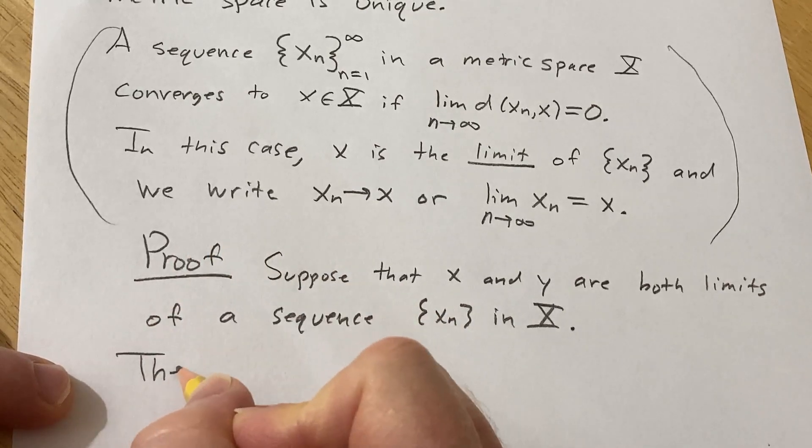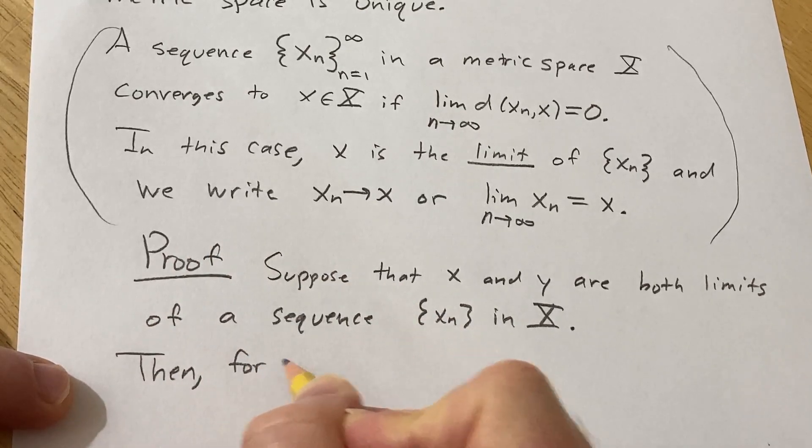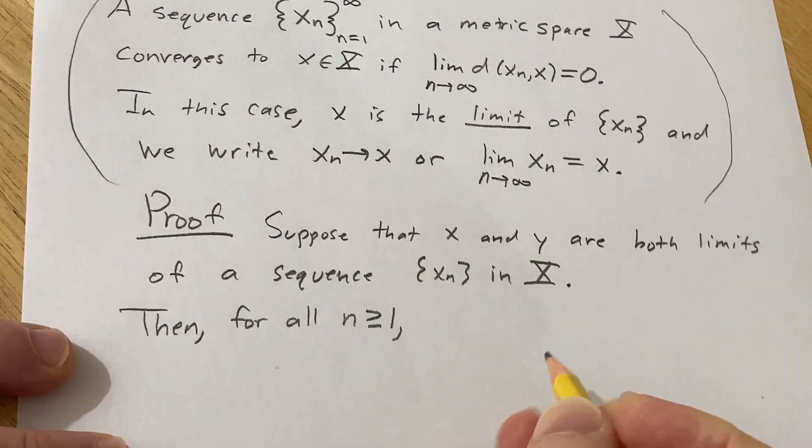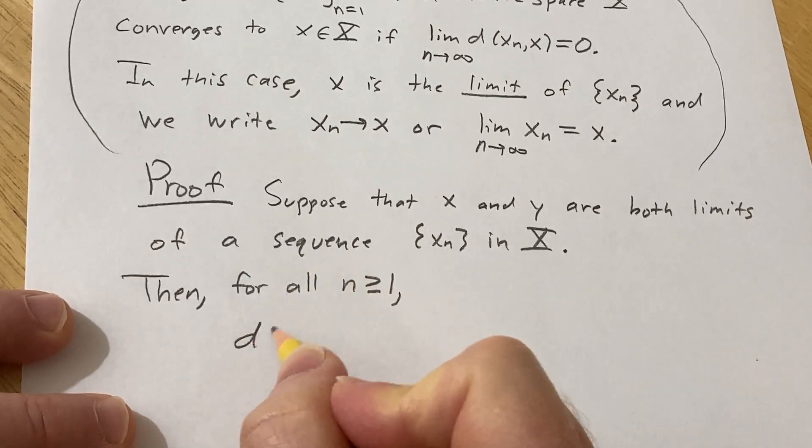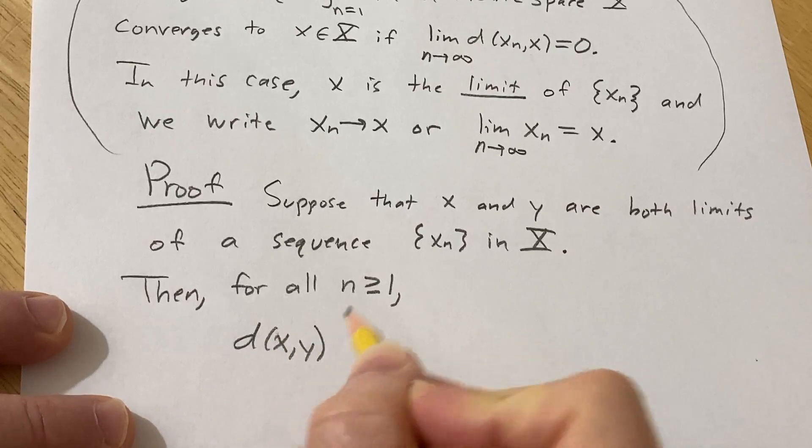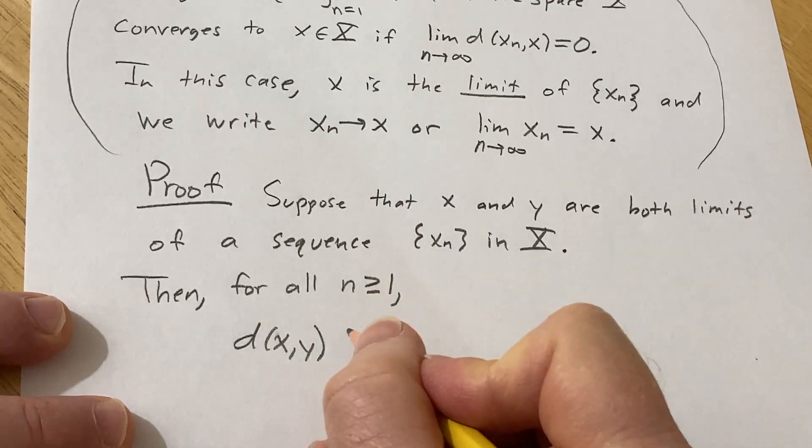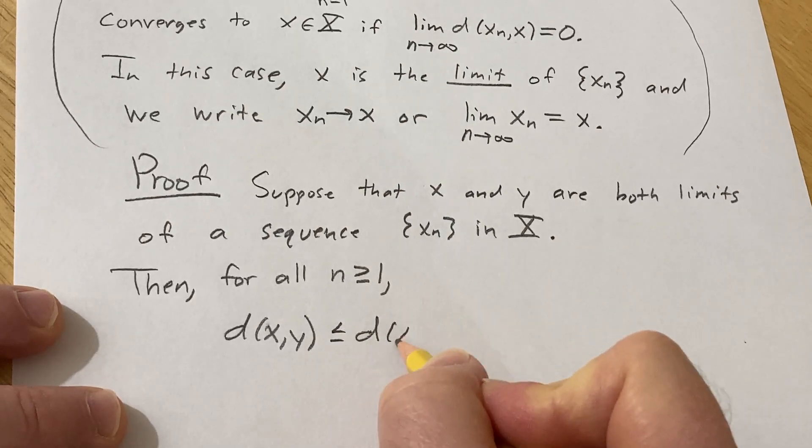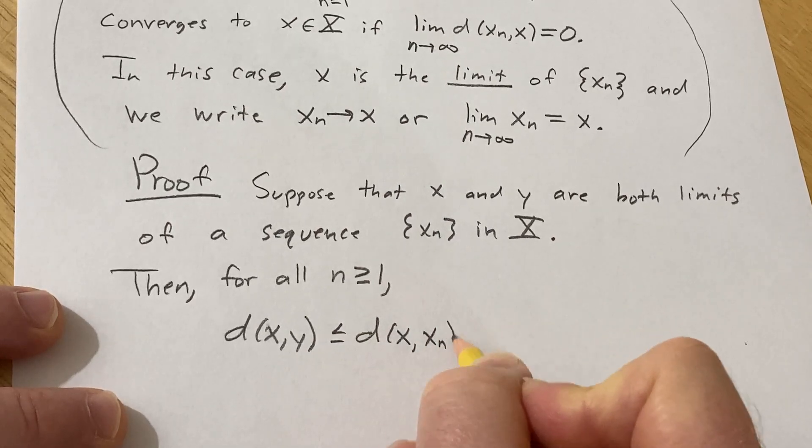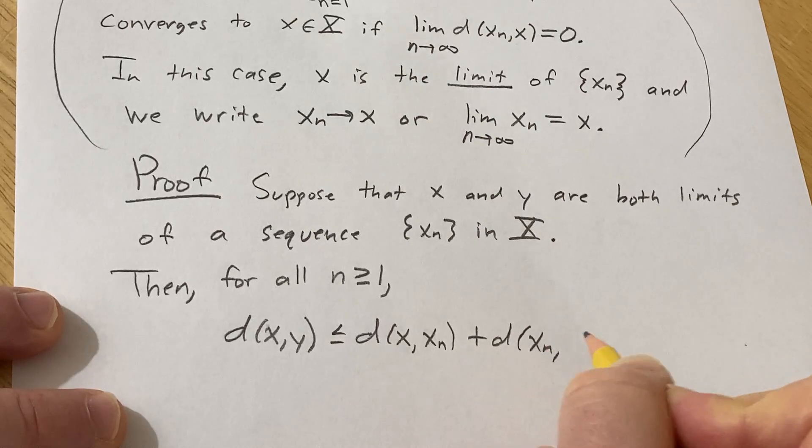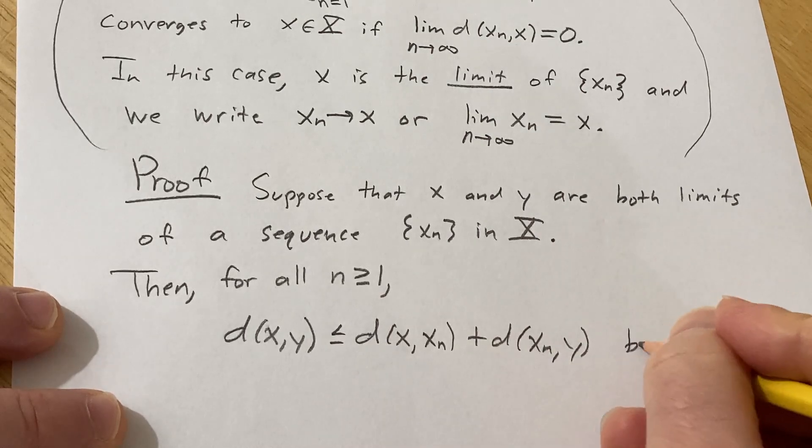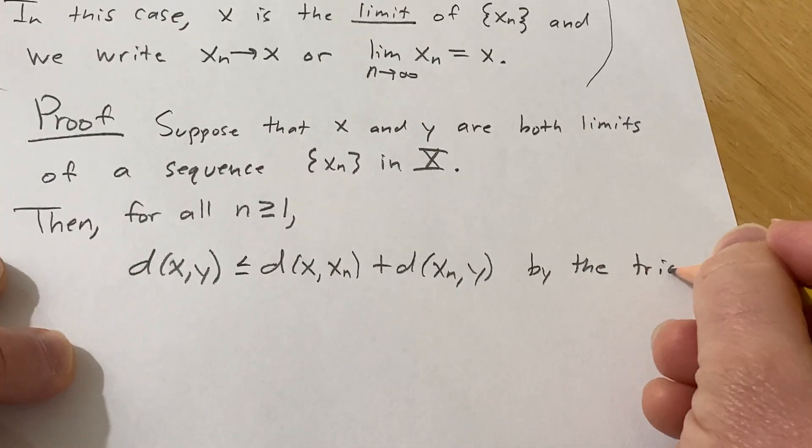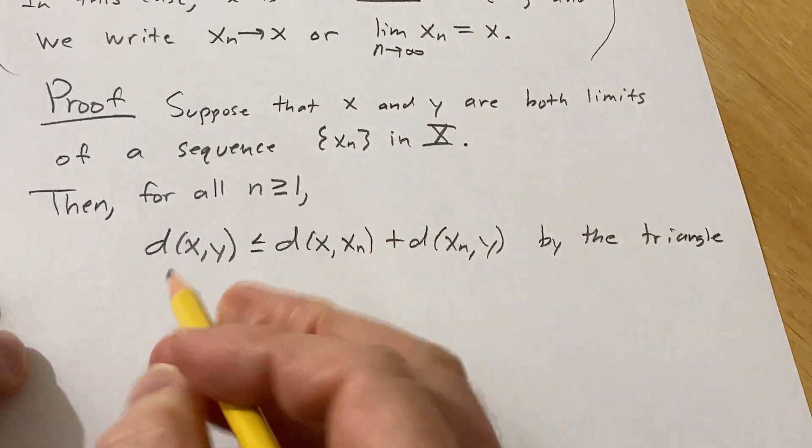So then, for all n greater than or equal to 1, we have that the distance between x and y. Well basically we have to show that this distance is zero. Well this is less than or equal to, by the triangle inequality, the distance between x and x sub n plus the distance between x sub n and y. And this is by the triangle inequality.